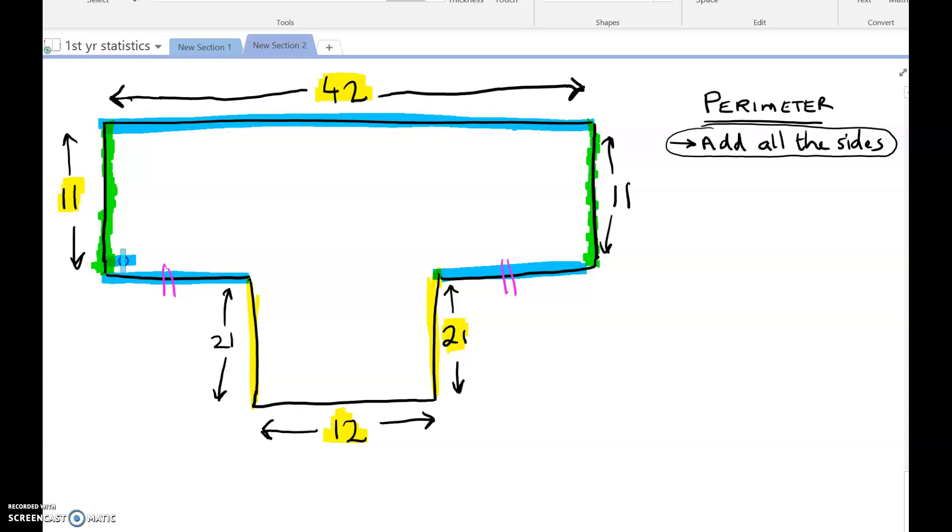So all of this here would also be 42. Now we don't want all of this here because we're missing a bit, aren't we? We only want what it is from here and then from here to here, these two bits.